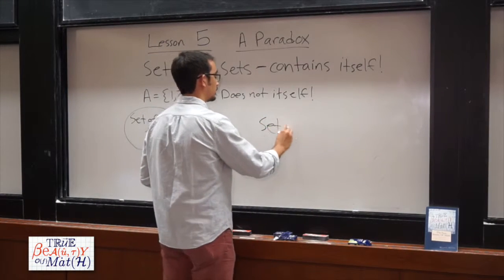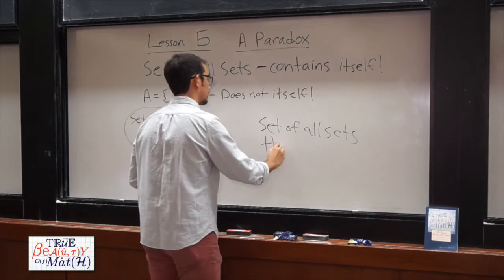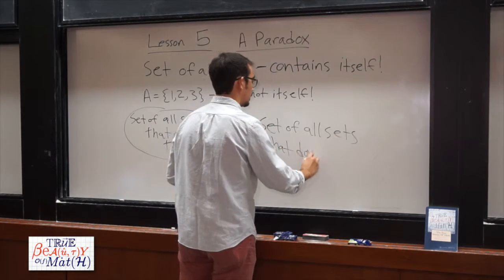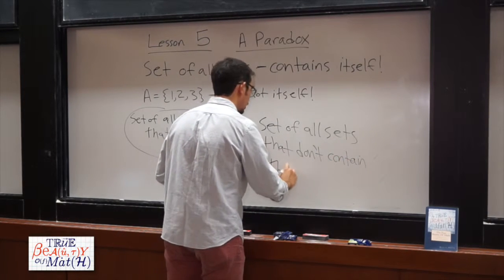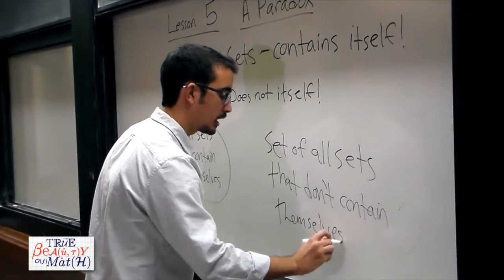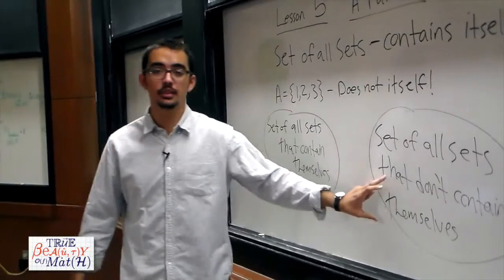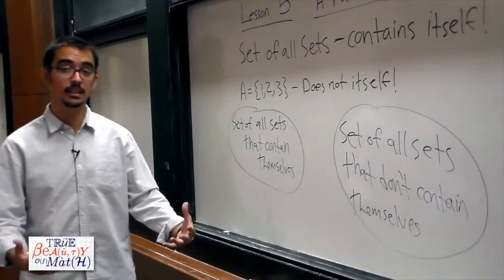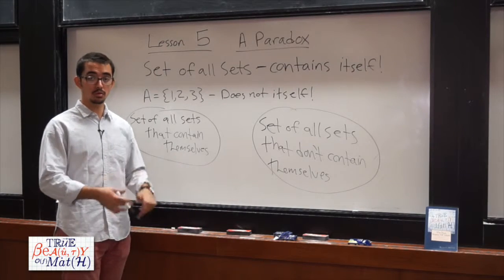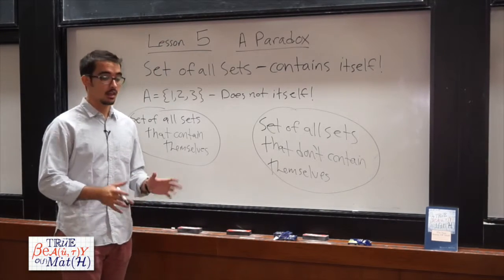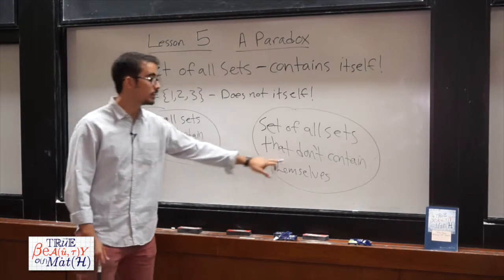We can also consider the set of all sets that don't contain themselves. By considering these two sets, we should be able to place any set in the whole universe into one or the other, because any set will either contain itself as an element or it won't contain itself as an element. Therefore any set we could possibly think of must be in one or the other.